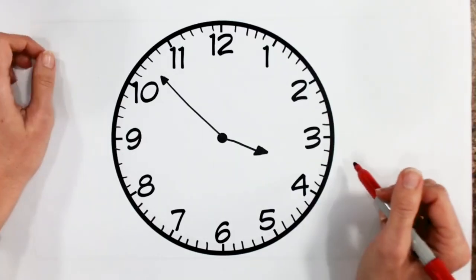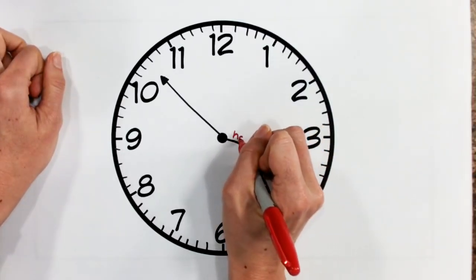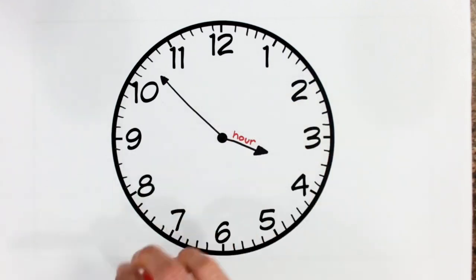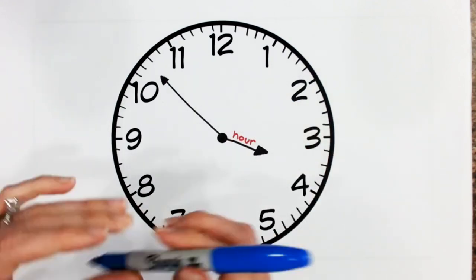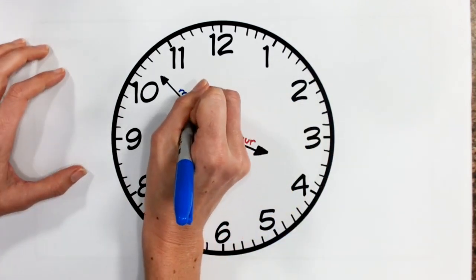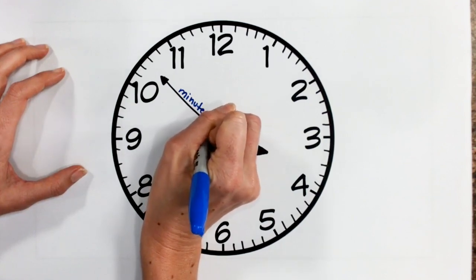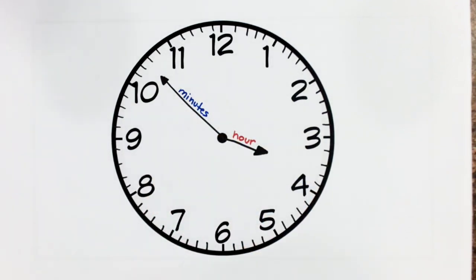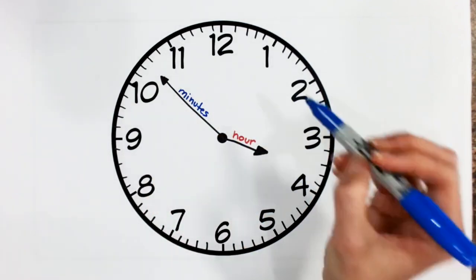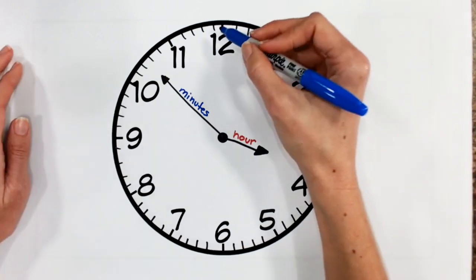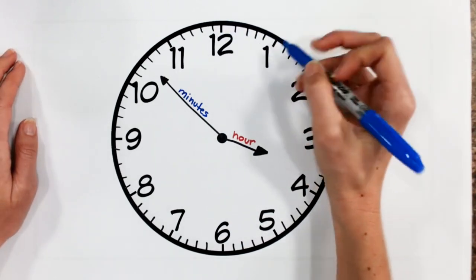So I see on this clock I have my short hand, which again represents the hour, and my long hand, which represents minutes. Now, again, we're going to go ahead and label each five-minute increment just to help students recognize.